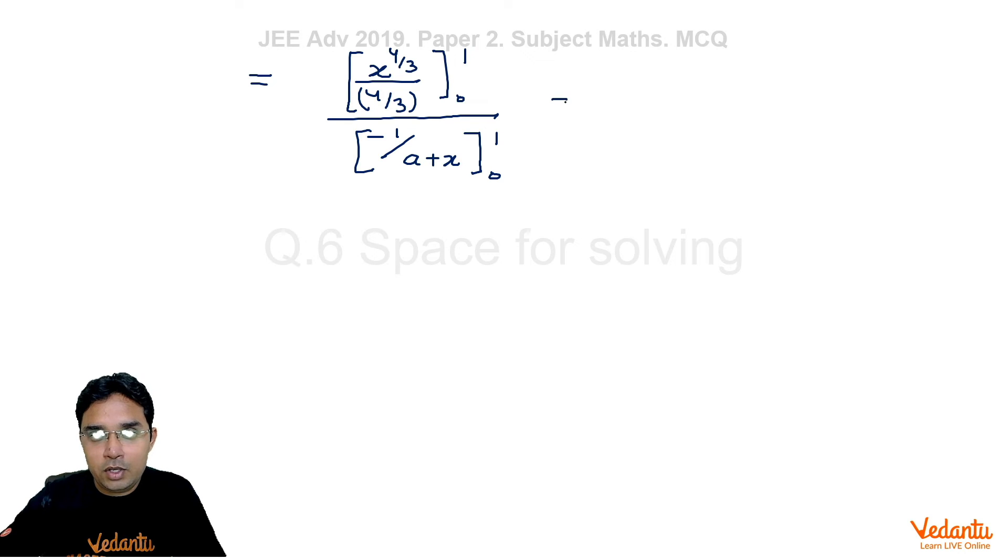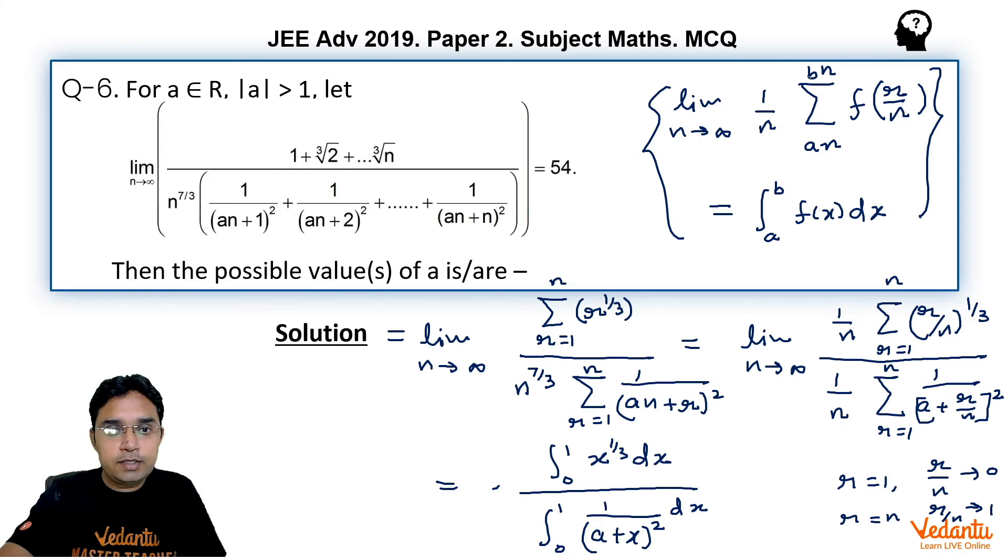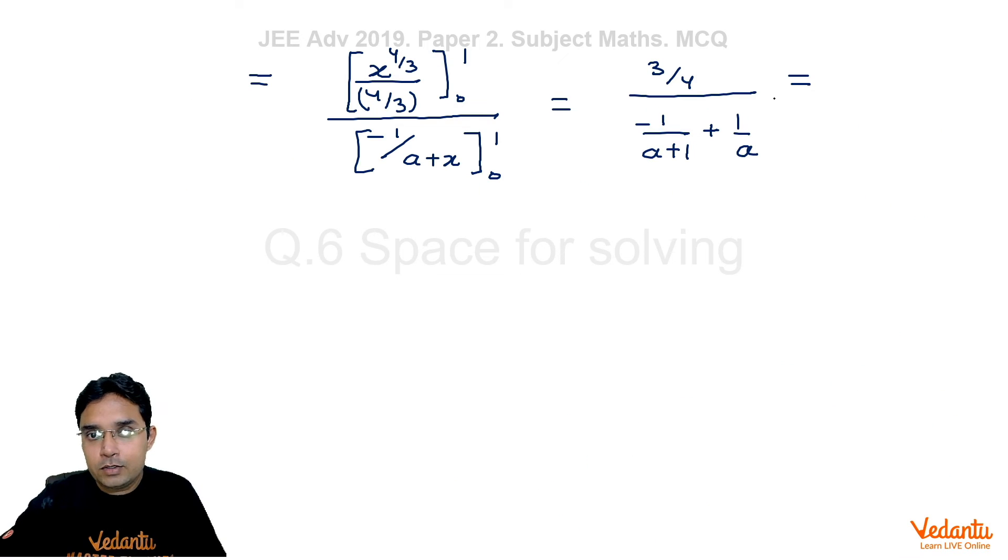So we get in the numerator to be 3/4 whereas in the denominator it will be minus 1 upon (a + 1) plus 1 upon a and this value is given as 54 so we will equate this to be equal to 54. Now you can write this as 1 upon a minus 1 upon (a + 1) is equal to after calculation it comes out to 1 upon 72.